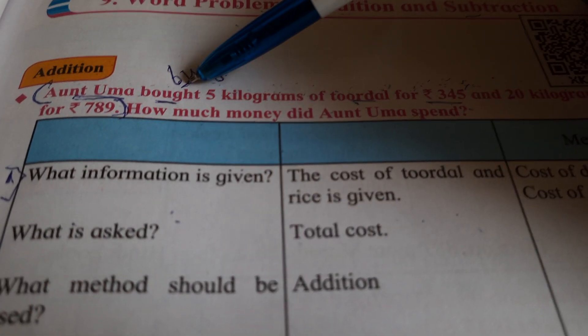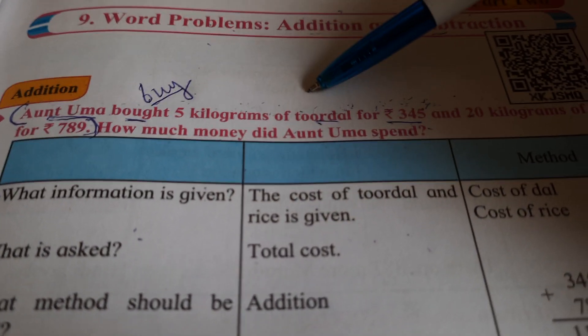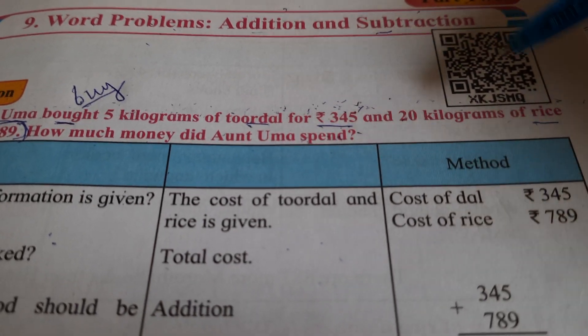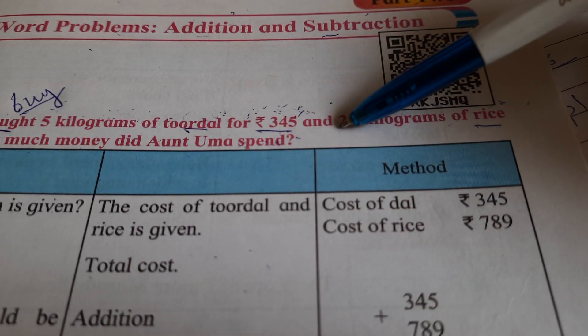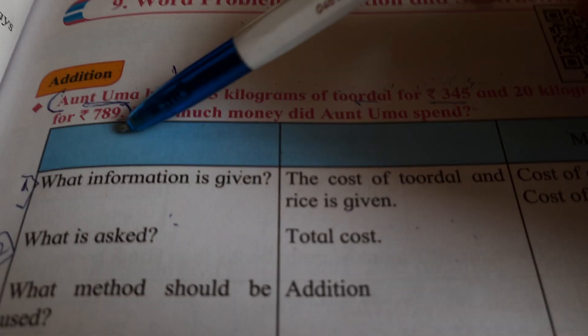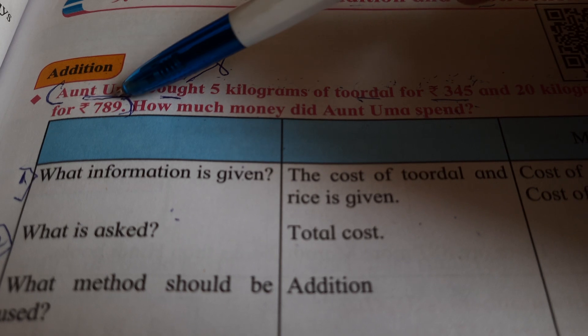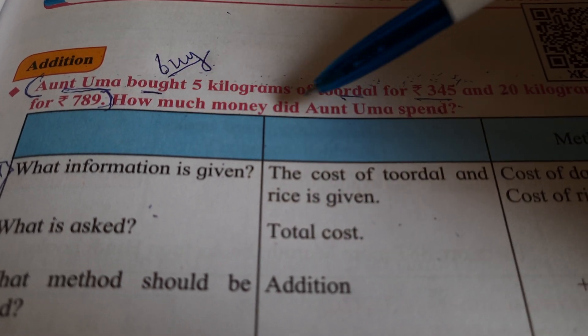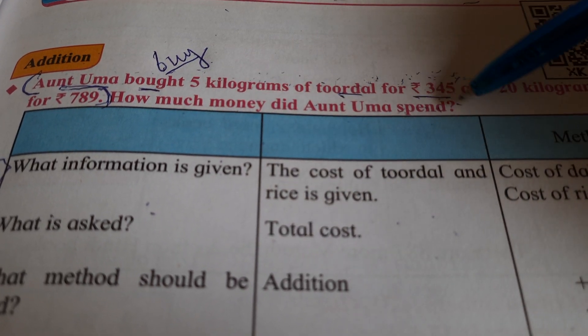Aunt Uma bought 5 kilograms of turdal for Rs. 345 and 20 kilograms of rice for Rs. 789. How much money did Aunt Uma spend?